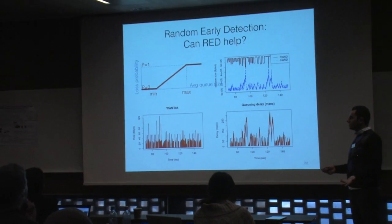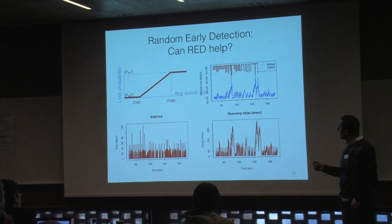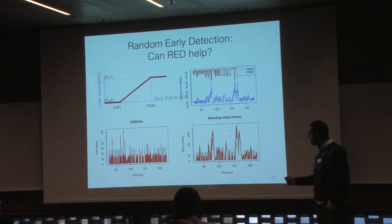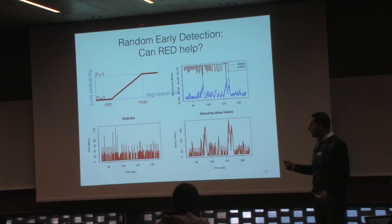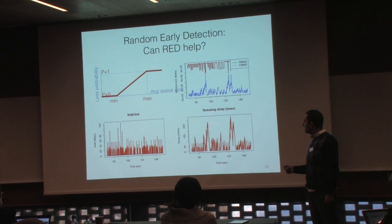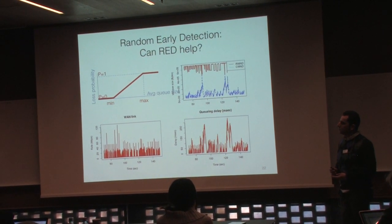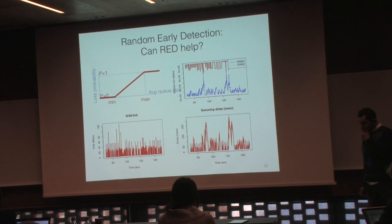Question about Random Early Drop (RED): We have some results in the paper. We didn't optimize RED parameters — just used standard deployment settings. It reduced queuing delay somewhat, to maybe 250–300ms, but doesn't really solve the problem. With variable bandwidth it actually gets worse. Adaptive RED might help, but we didn't try that.